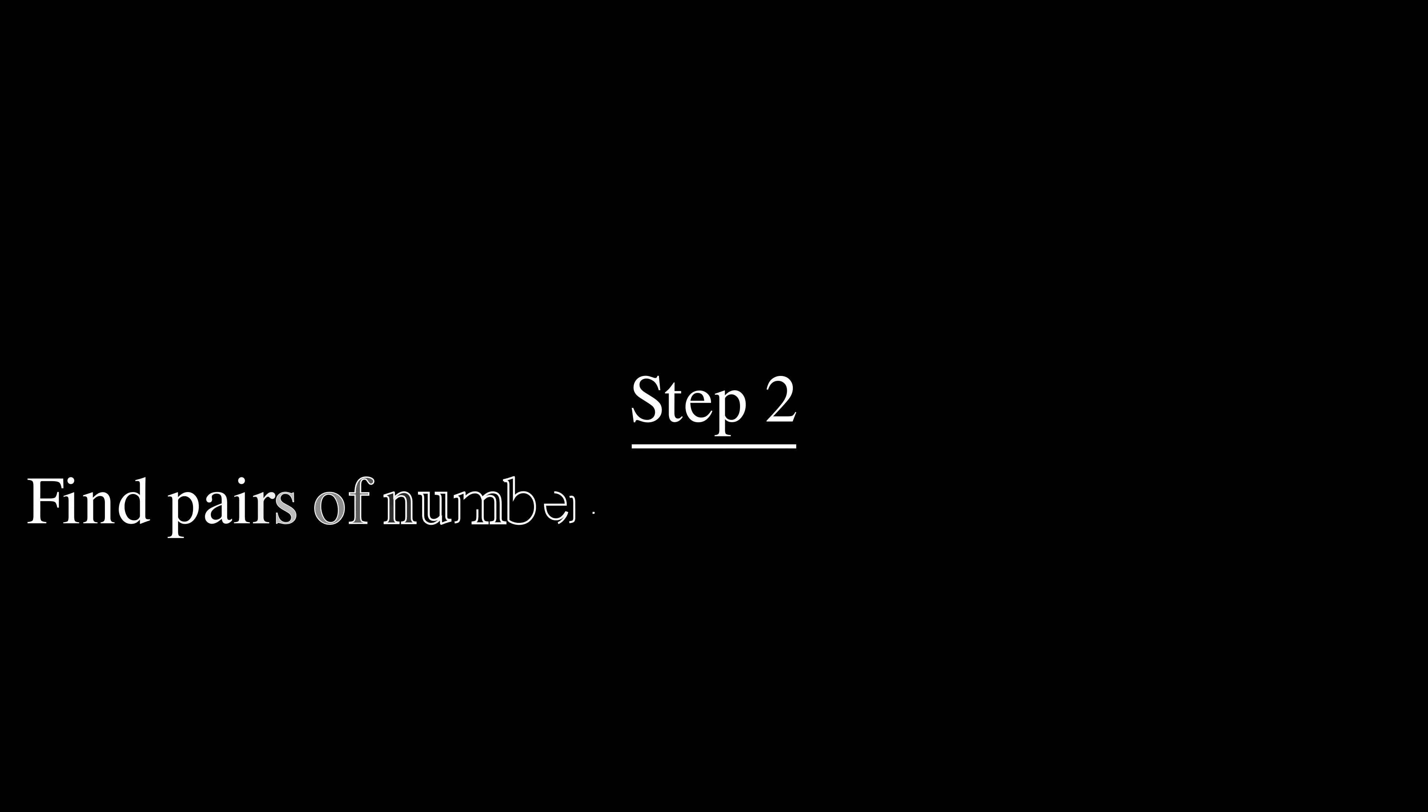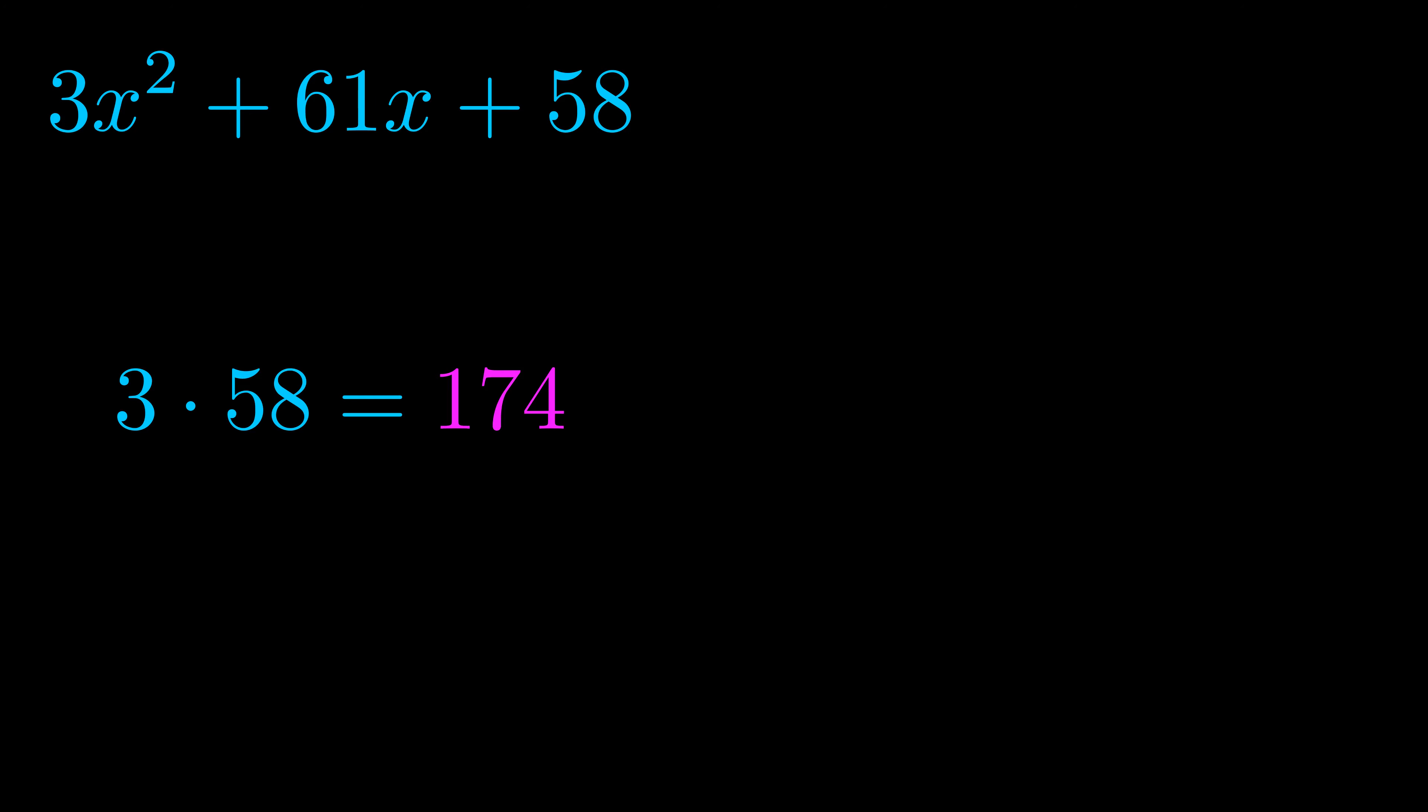Step two is to try to find all of the pairs which multiply to this number. Now turns out you don't really need to find all of them but go ahead and write down as many numbers as you can that multiply to the magenta value for now. Pause the video and resume when you're ready to continue.